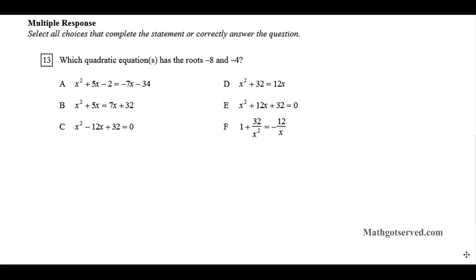Let's take a look at question number 13. The question asks which quadratic equation has roots negative 8 and negative 4. The easiest way is to generate the equation of a quadratic that has negative 8 and negative 4 as roots. We start with the roots: x equals negative 8 and x equals negative 4.